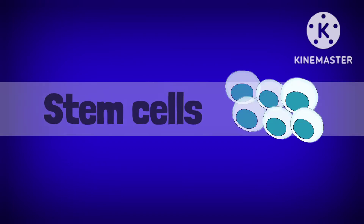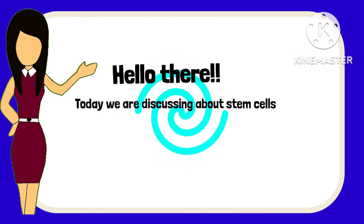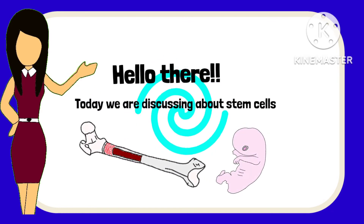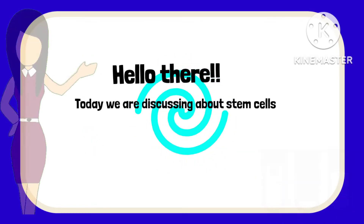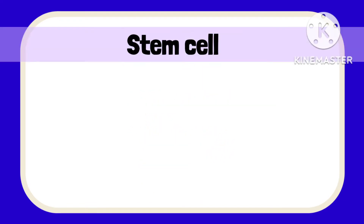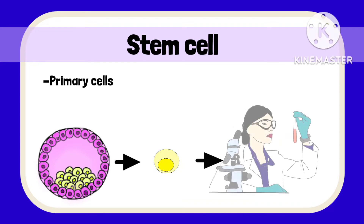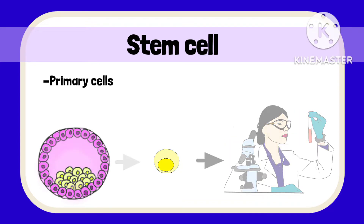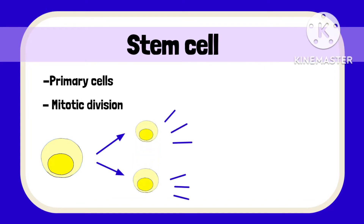Today we are going to discuss stem cells. Stem cells are primary cells, which means they can be taken directly from living tissues and can be grown in a controlled setting for medical uses. Stem cells do so through mitotic division and they can differentiate to become any specialized cells.